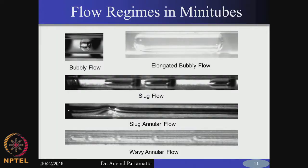People also refer to this as Taylor bubble flow — not a classical spherical bubble, but an elongated bubble. From the top and bottom, although the bubble looks like it is touching the tube, you have a very thin film of liquid which protects the bubble from direct heat transfer from the tube. Therefore, the predominant regimes will be based on slug flow.